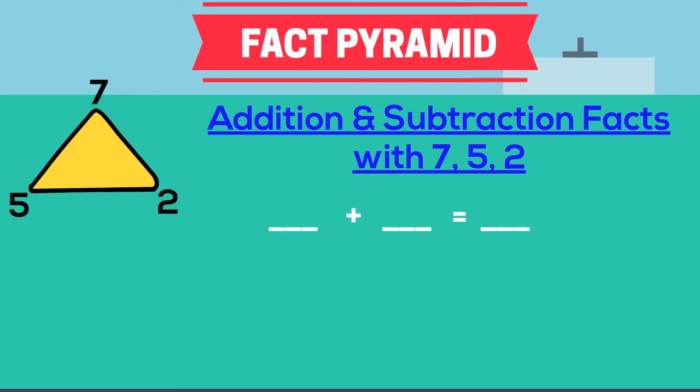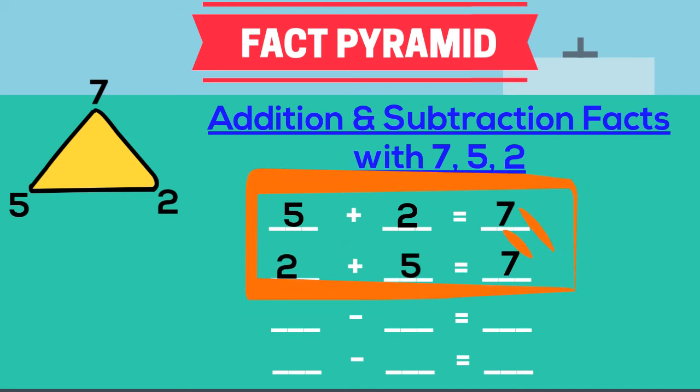Now, we will make two addition sentences where the biggest number, here 7, will go in the sum position. Then, we will take the base numbers randomly and put it in the addend position. Here, 5 plus 2. For the next one, we need to just switch the position of the addends. That is, using the commutative property. So, 2 plus 5. We get two addition facts.